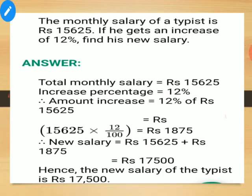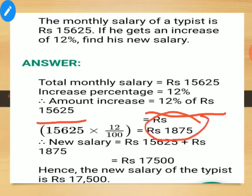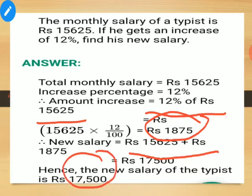The monthly salary of a typist is Rs. 15,625. If he gets an increase of 12 percent, find his new salary. First calculate 12 percent of Rs. 15,625 to find the increment amount, which gives Rs. 1,875. The new salary will be 15,625 plus 1,875 equals Rs. 17,500.